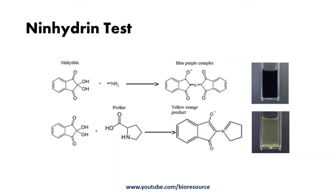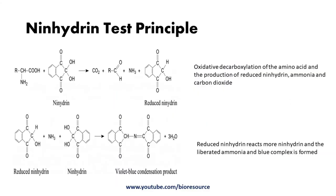The principle of the ninhydrin test: ninhydrin is a strong oxidizing agent, and in its presence amino acids undergo oxidative deamination, liberating ammonia, carbon dioxide, and the corresponding aldehyde along with a reduced form of ninhydrin. The ammonia formed from the alpha amino group then reacts with ninhydrin and its reduced product to give a blue substance called diketohydrin.